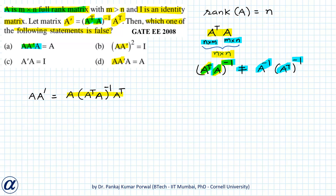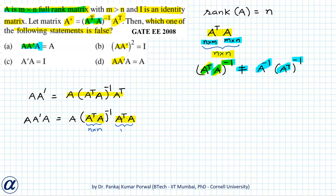Note that A and A transpose are rectangular matrices, but A transpose A is a square matrix of size n by n and is invertible. So A transpose A inverse into A transpose A, as a group, equals the identity matrix. Therefore A times A dash equals A into I, which equals A.